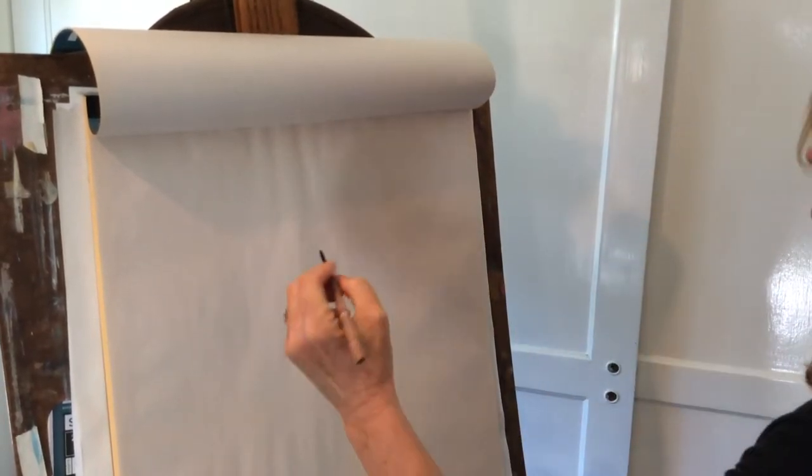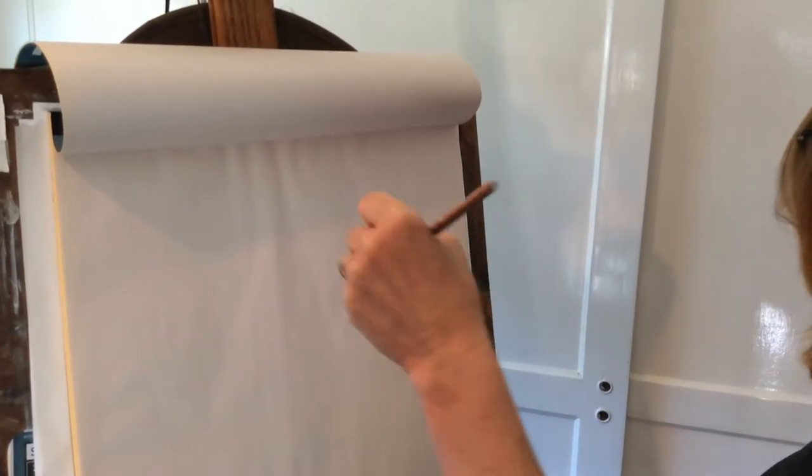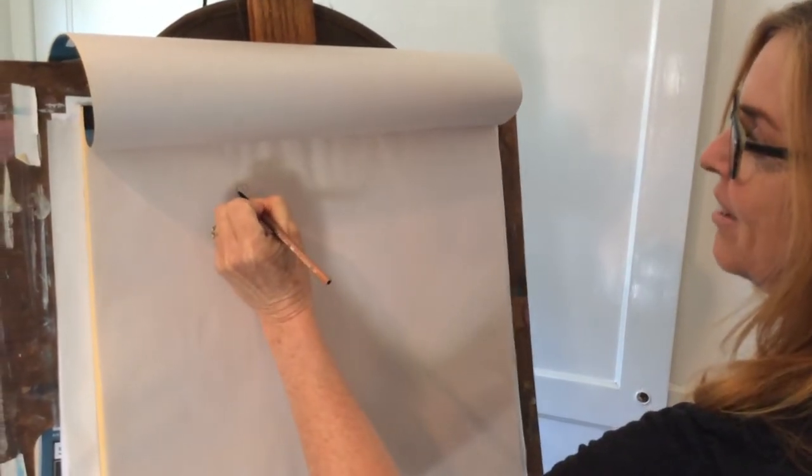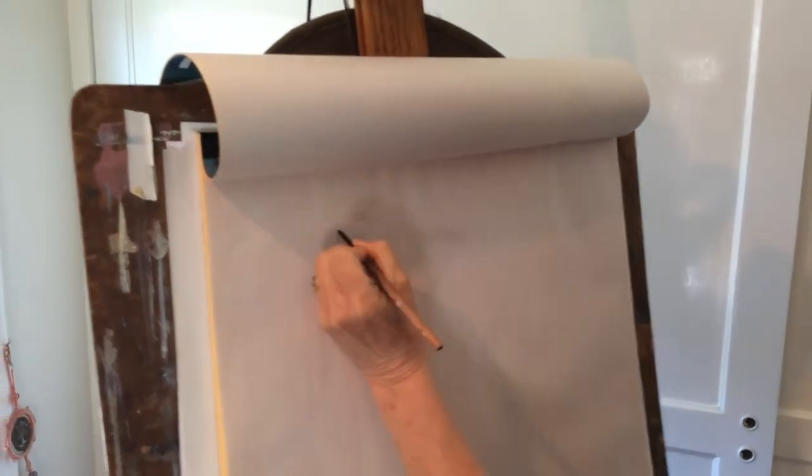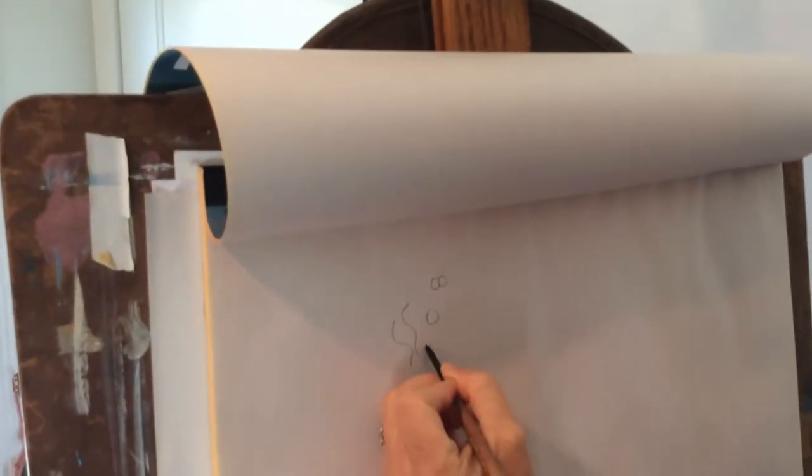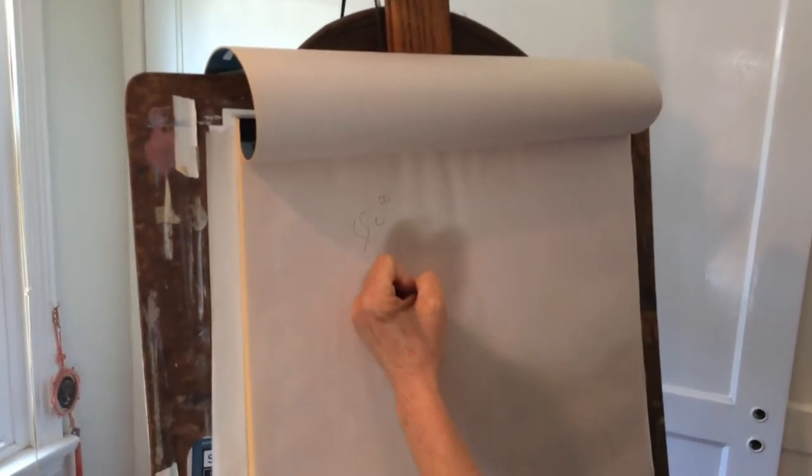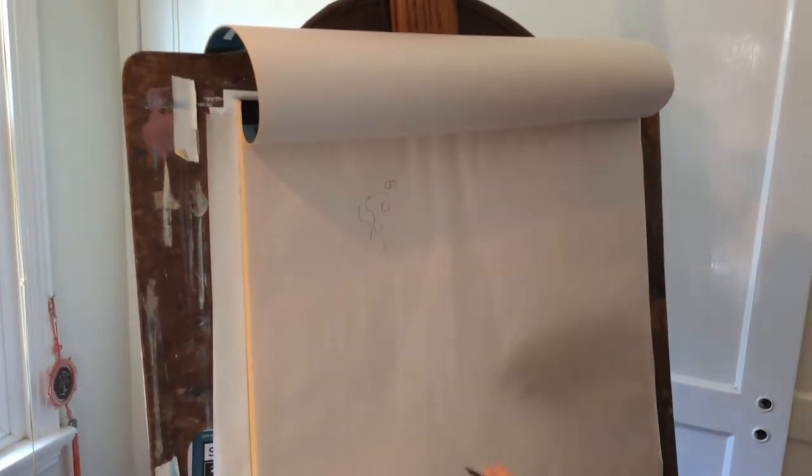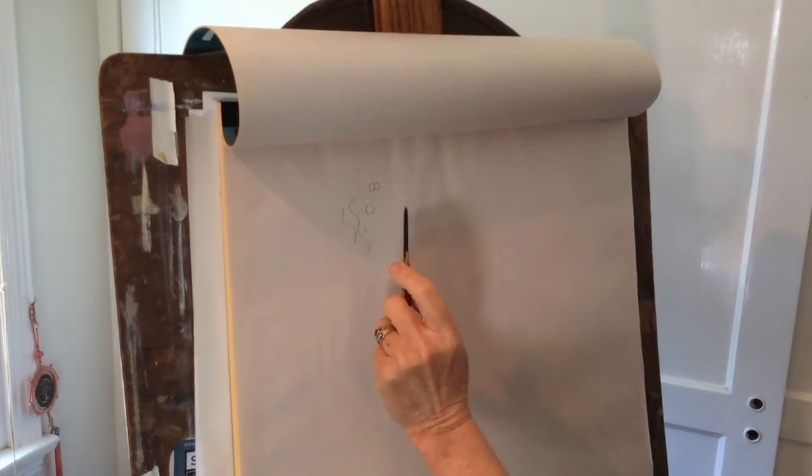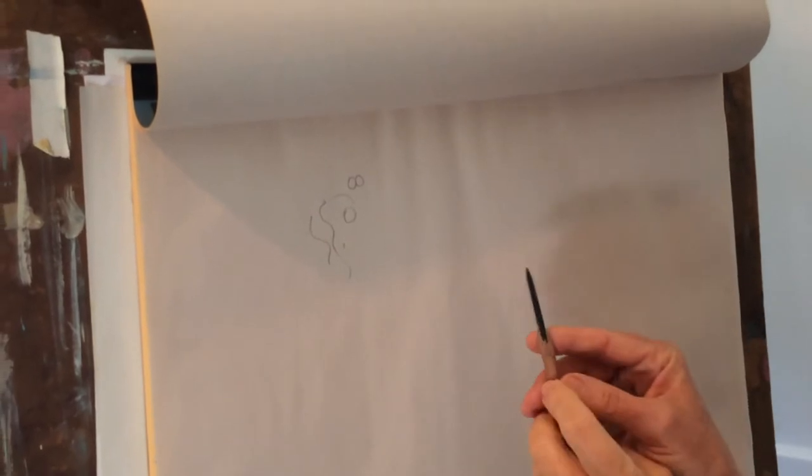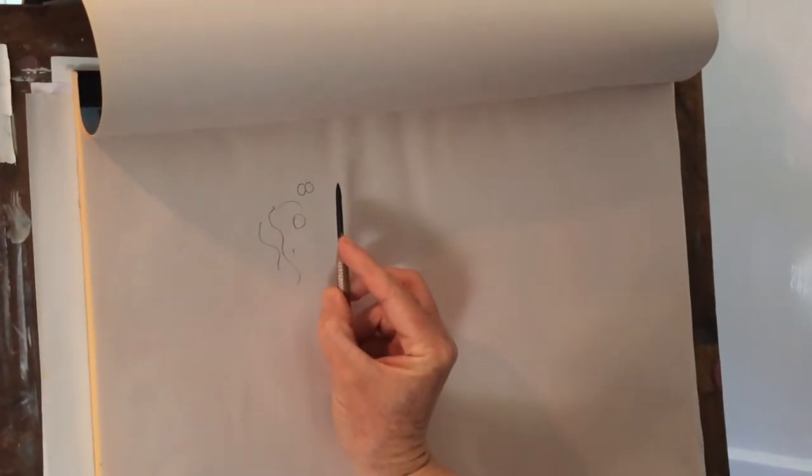When I first started drawing, I used to hold my pencil like this. And as you can tell, I started making these teeny-weeny little shapes all over, and lines all over. You could hardly see them. So I had a great art teacher show me that, yes, when you want to have more controlled lines, you can do that, but you can also hold your pencil like this. Now, I'm left-handed, so I'm just going to switch hands real quick because you might be right-handed.